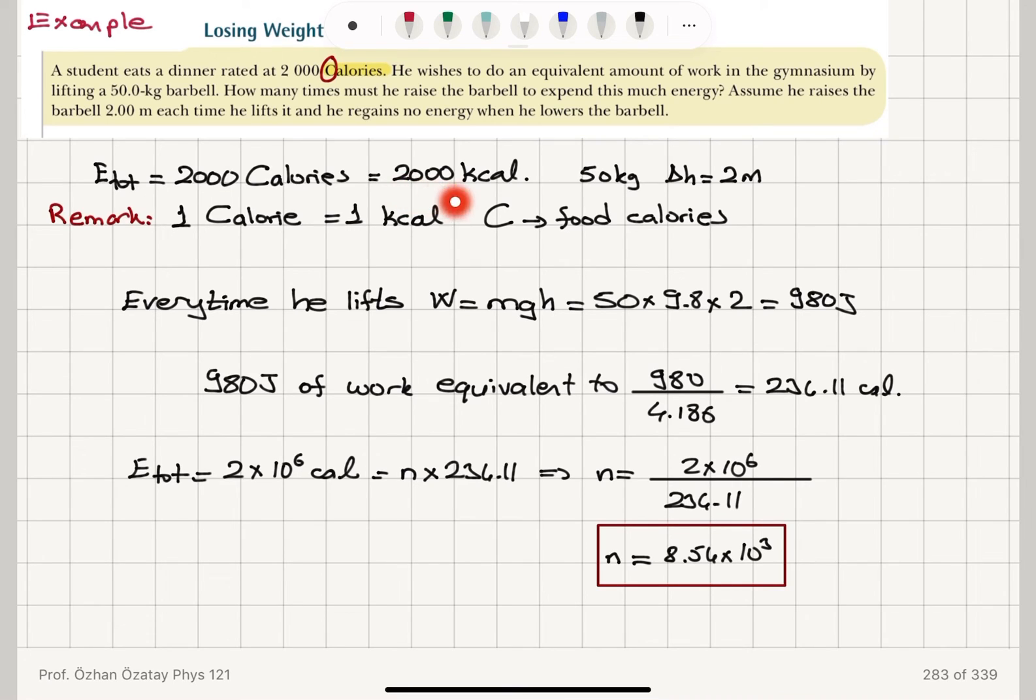And finally, we talked about an example. In order to spend 2,000 kilocalories, which is equivalent to 2,000 food calories, we have to raise a bar, 2 meters, 50 kilograms, which gives us 980 joules of work. 8.54 times 10 to 3 times to get the equivalent amount of food calories. So 2 times 10 to 6 calories of heat is equivalent to N times 234.11 joules of work. So N turns out to be a huge number. Therefore, it's not a good idea to eat this very high-calorie dinner.